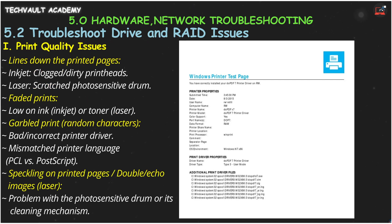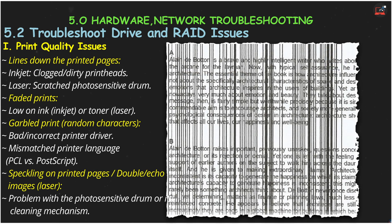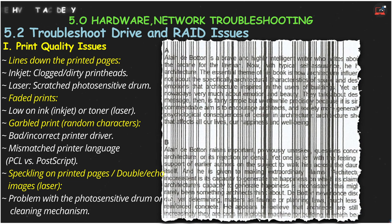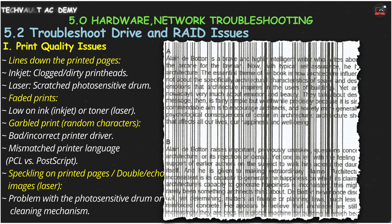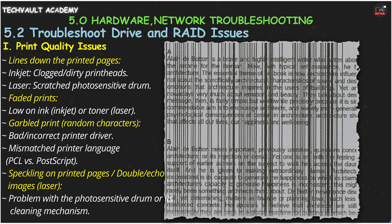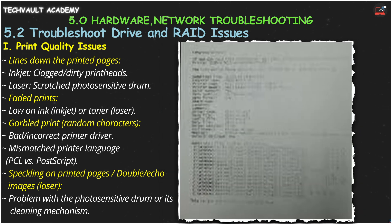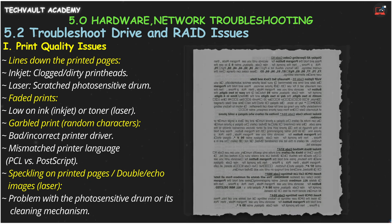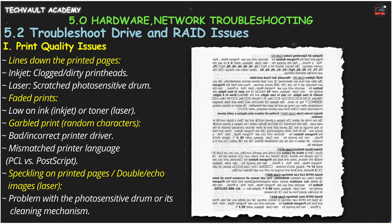Let's look at print quality issues. If you see lines down the printed pages, it's often a clogged printhead on an inkjet printer, or a scratch on the photosensitive drum in a laser printer. If your prints are faded, you're likely low on ink or toner. For garbled print, where you get random nonsensical characters, the issue is likely a bad or incorrect printer driver, or a mismatch in the printer language, like sending PCL to a PostScript printer.